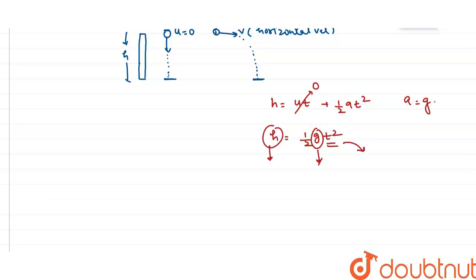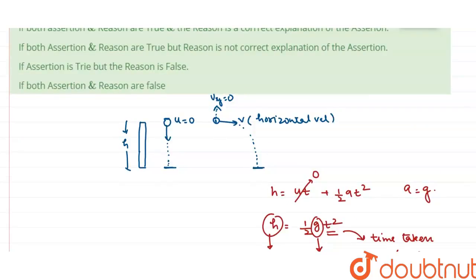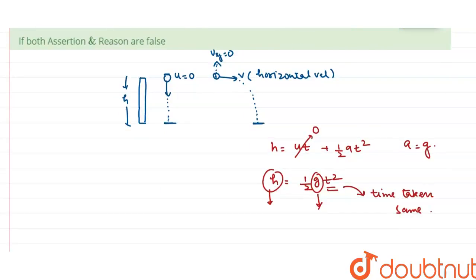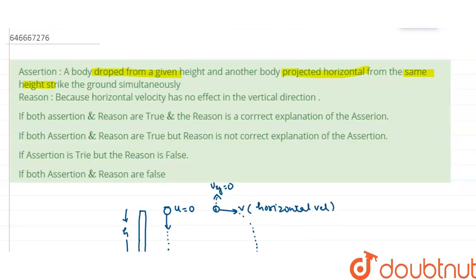Since h is the same for both bodies and g is also the same, the time taken is also the same. The horizontal velocity only moves the body in the horizontal direction and has no effect in the vertical direction. Therefore, the vertical motion is identical for both bodies — same height, same g — so time taken by both is equal. Both assertion and reason are correct, and the reason is the correct explanation of the assertion.